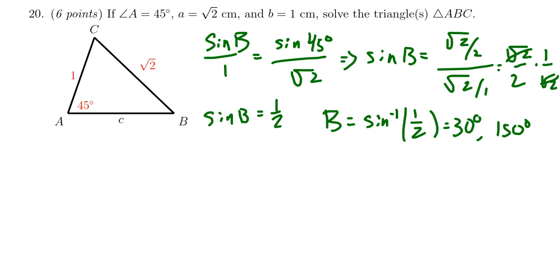So we have to consider two possibilities. For the first triangle, we're taking 30 degrees for B. Then what would C be? Angle C would be 180 degrees minus B, which is 30 degrees, minus A, which was 45 degrees. So we have 180 take away 75 degrees, and we end up with C being 105 degrees.